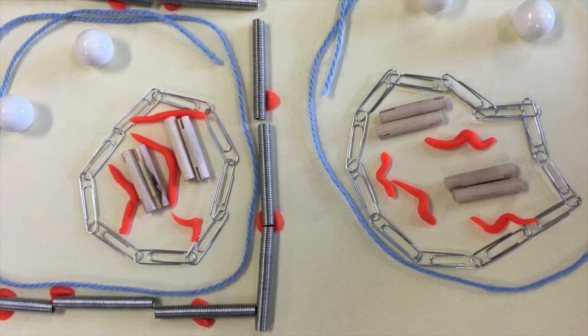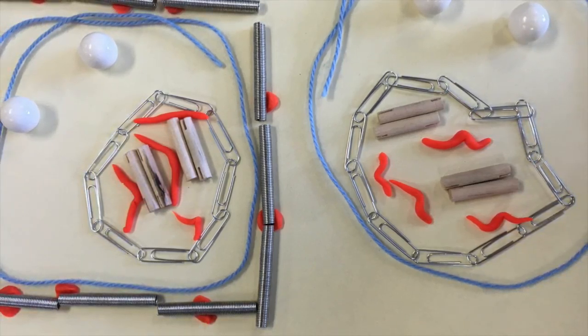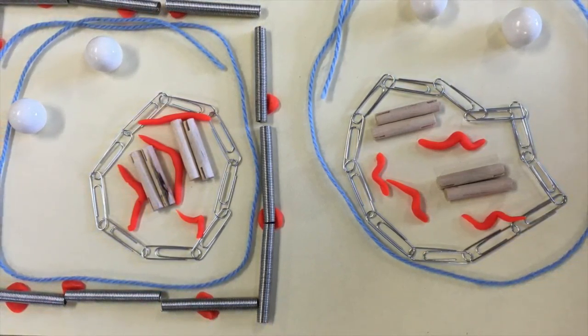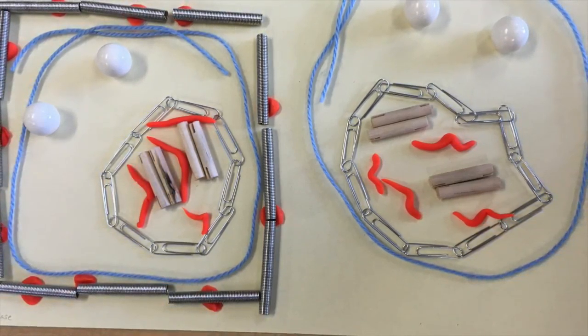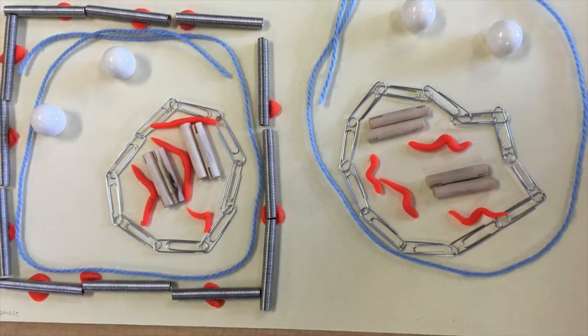Cytokinesis is essentially the same in both animal and plant cells, except for the fact that when the cell is divided, the cell wall, depicted by the metal rods, also has to be split up, and an animal cell does not have a cell wall.